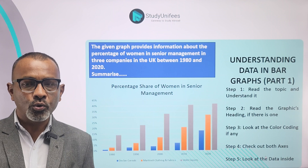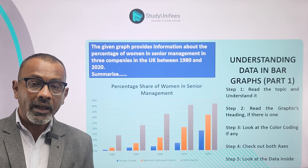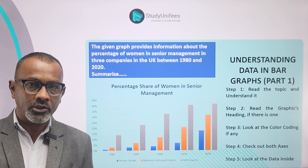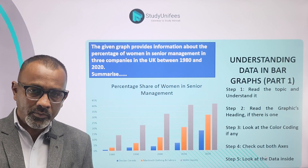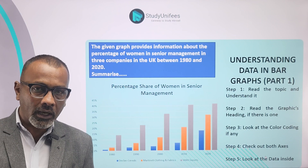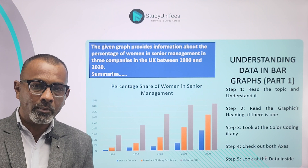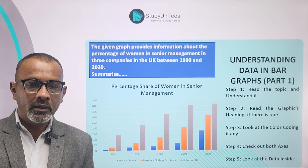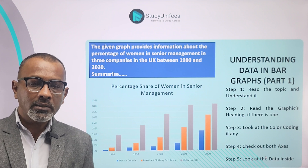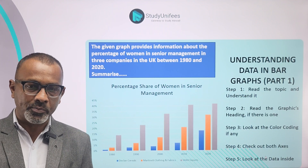Step number 2: read the graphic's heading if there is one. This graphic has a heading: 'Percentage share of women in senior management.' This matches with the topic we've just read. Step number 3: look at the color coding. The color coding right at the bottom of the graphic is that of three companies — Declan Cereals, Martinelli Clothing and Fabrics, and Saka Exports.